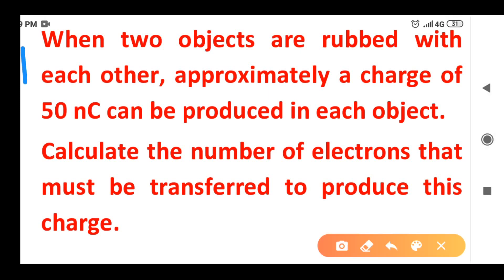When two objects are rubbed with each other, approximately a charge of 50 nanocoulomb can be produced in each object. That is, when two objects are rubbed around, one object will have 50 nanocoulomb charges produced.